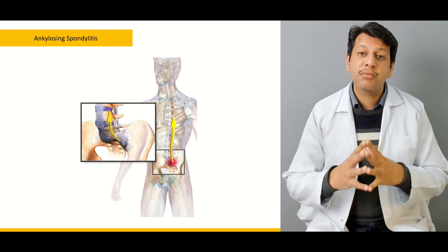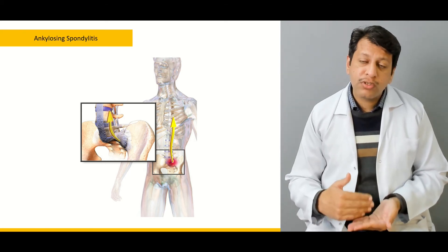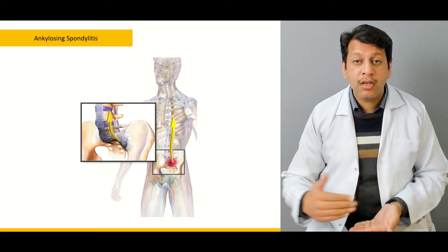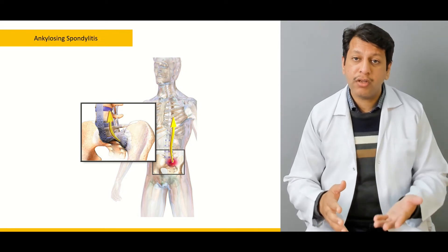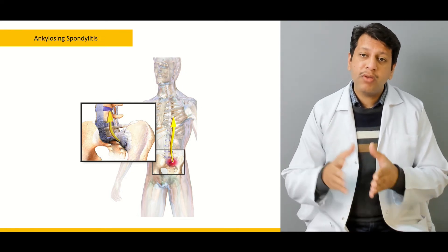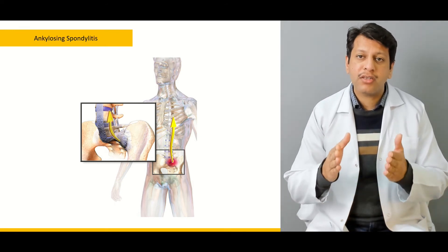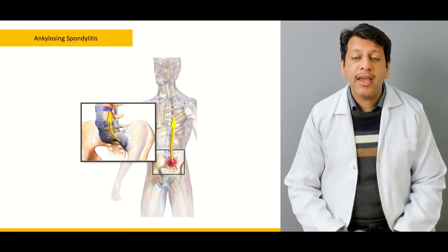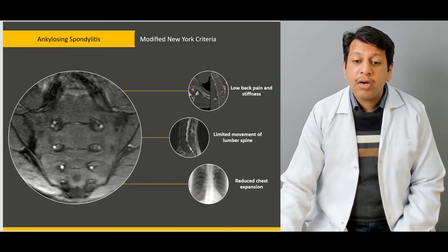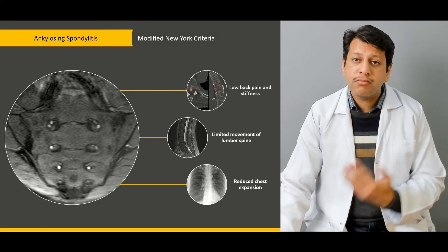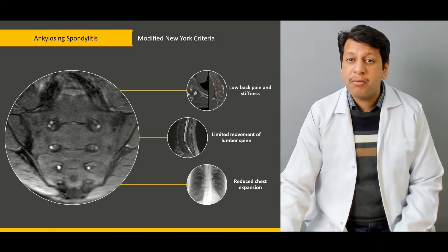The next condition we will discuss is ankylosing spondylitis, also an autoimmune systemic disease requiring involvement of multiple specialties. We will focus on how it affects the cervical spine, the different diagnostic criteria, and how to assess the patient who typically presents with low back pain, muscle spasm, and restricted neck and lumbar spine movements.